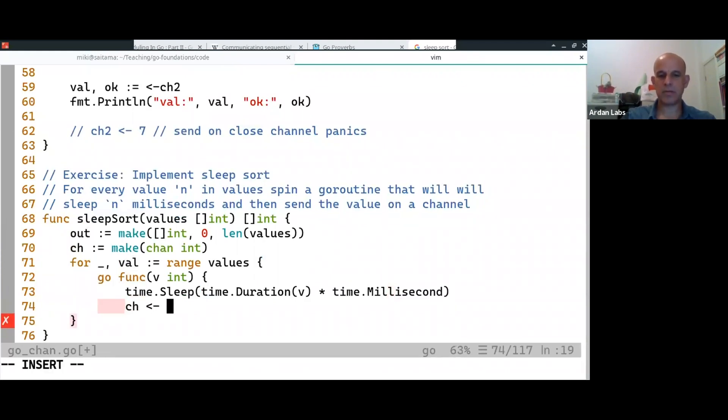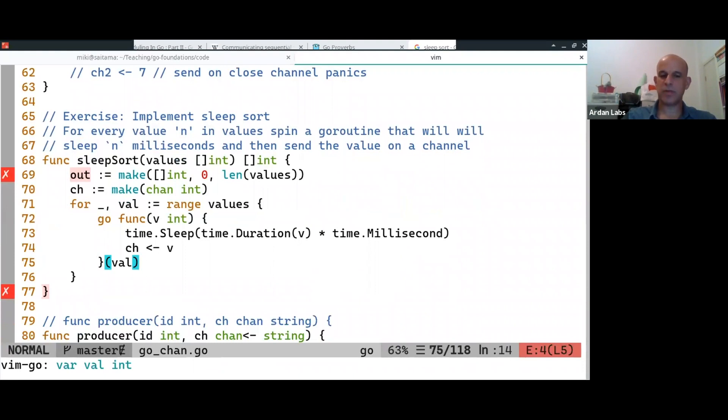I'm going to send the value to the channel, but then I'm going to call this function with the value. I'm avoiding the bug that we saw earlier with catching the value from the closure. So I'm creating a function that gets a parameter, and I'm passing this parameter to the function, so each one will get its own.